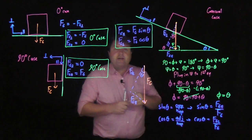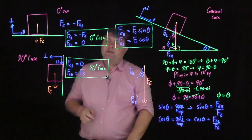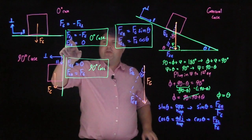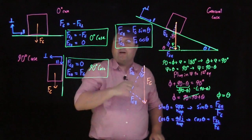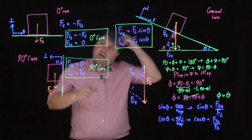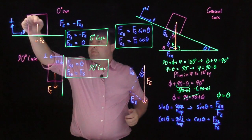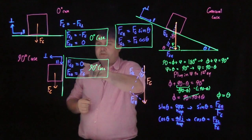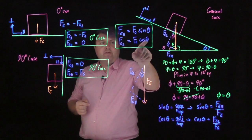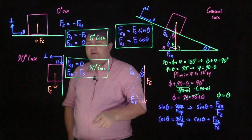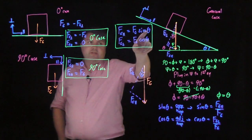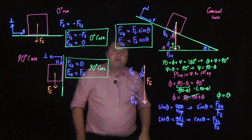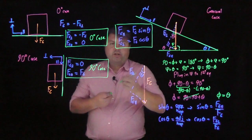We can test these for our known cases. FG parallel is FG sine of zero degrees, which is zero. FG perpendicular is FG cosine of zero, which is one — and we defined it as negative, so everything checks out. For the 90-degree case, FG perpendicular is FG cosine of 90 degrees, which is zero. FG parallel is FG sine of 90 degrees, which is one, giving us FG. So this is our general case.